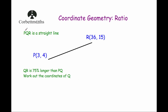Our next question: PQR is a straight line with P at (3, 4) and R at (36, 15). We've been told that QR is 75% longer than PQ. So Q is somewhere along the line such that the distance from Q to R is 75% larger than the distance from P to Q. We need to work out the coordinates of Q.